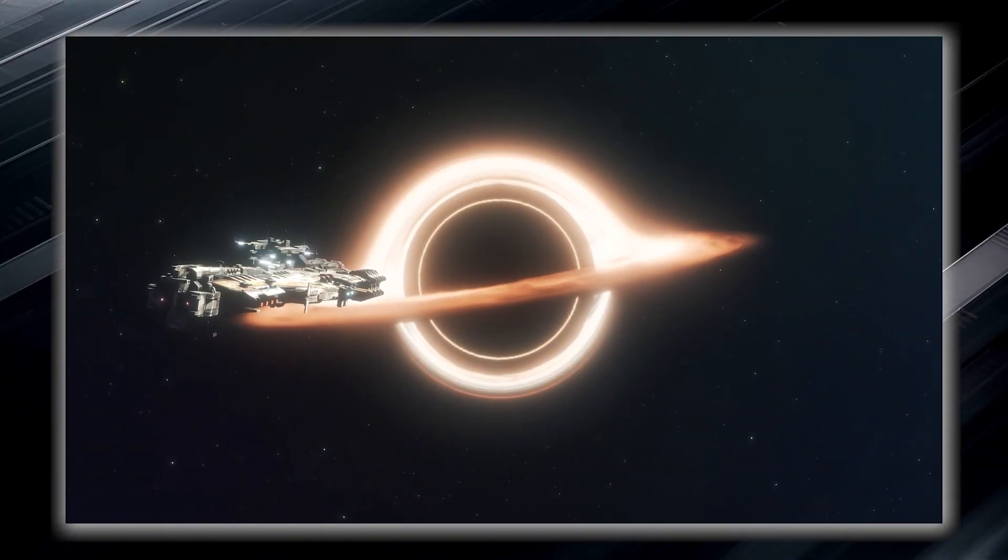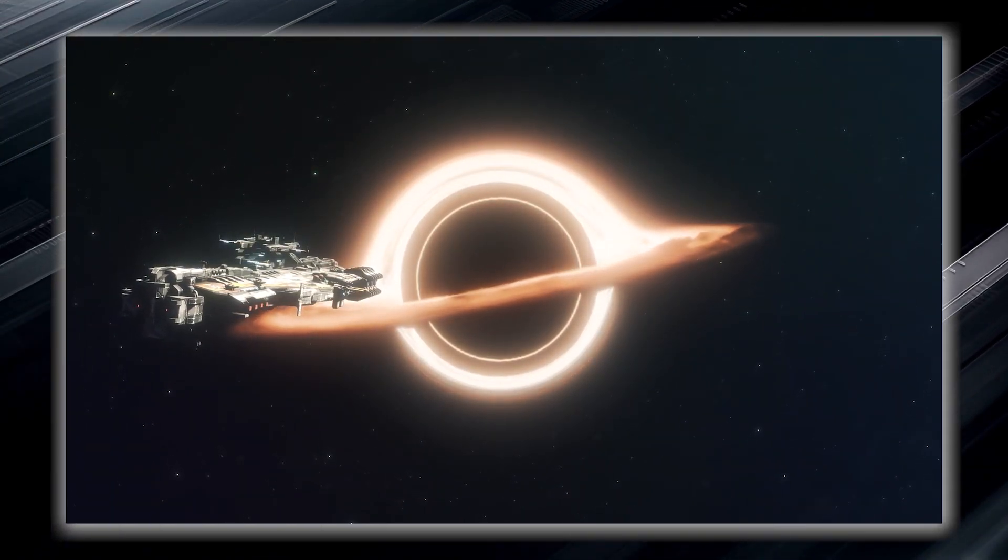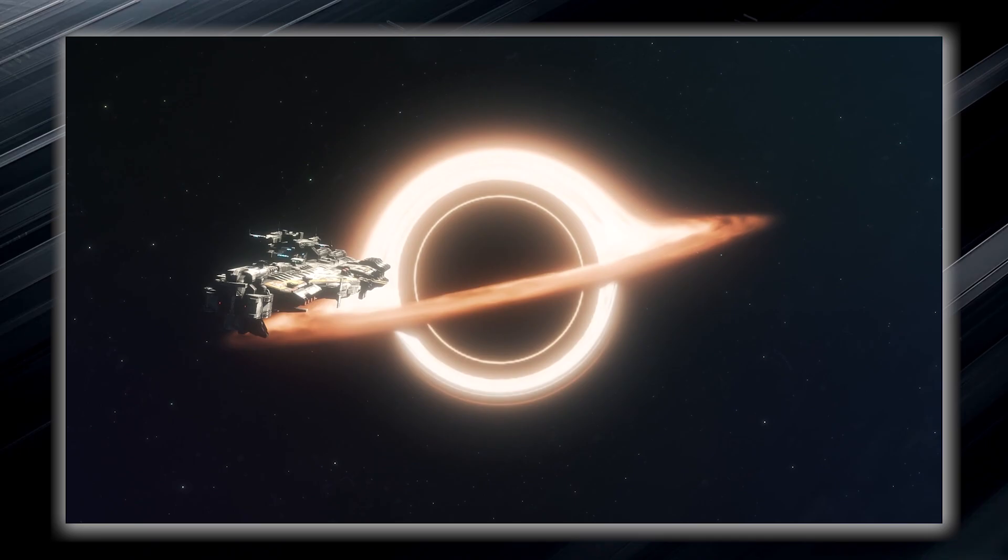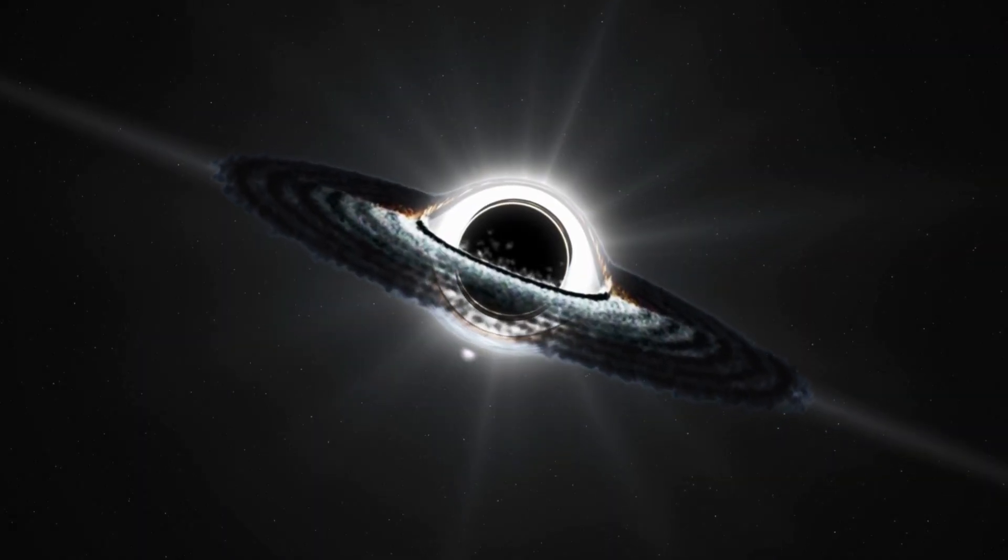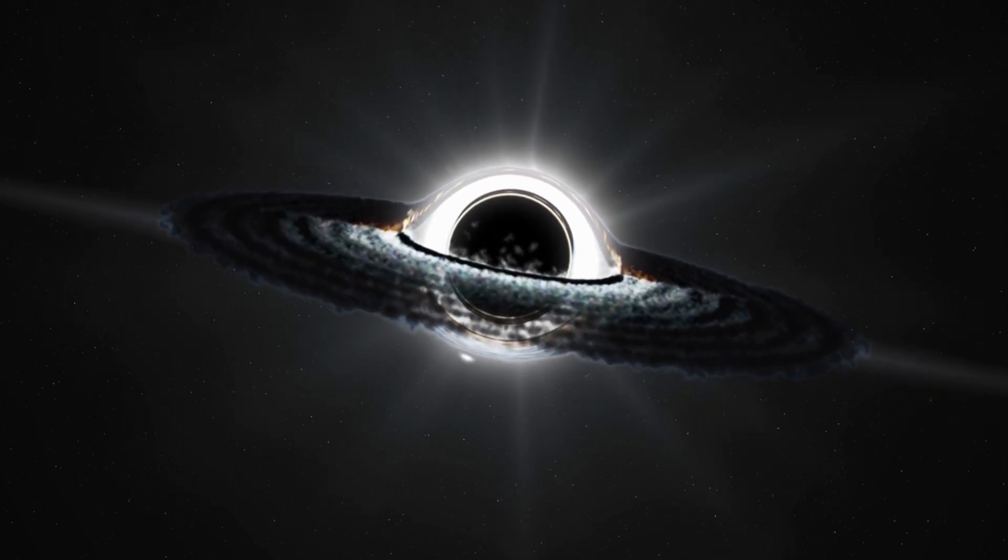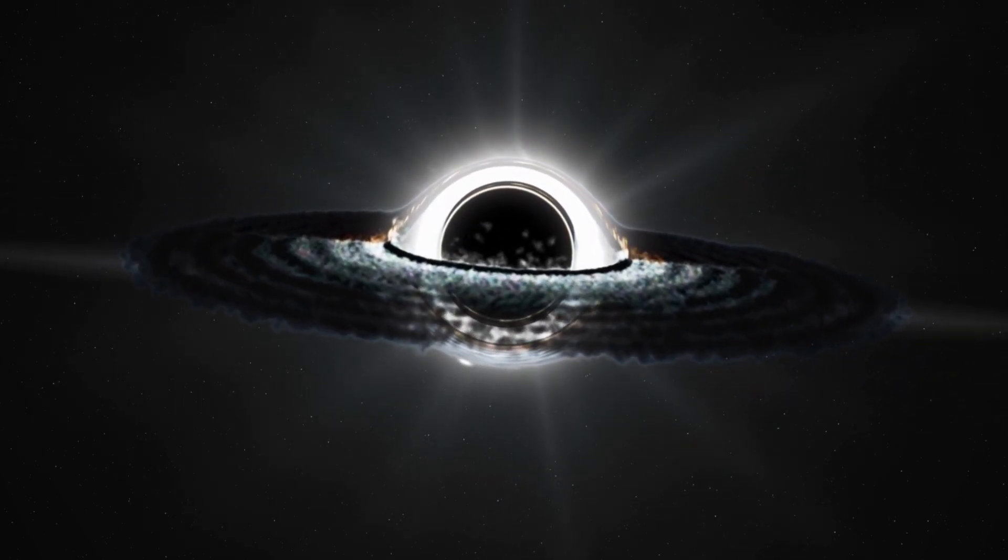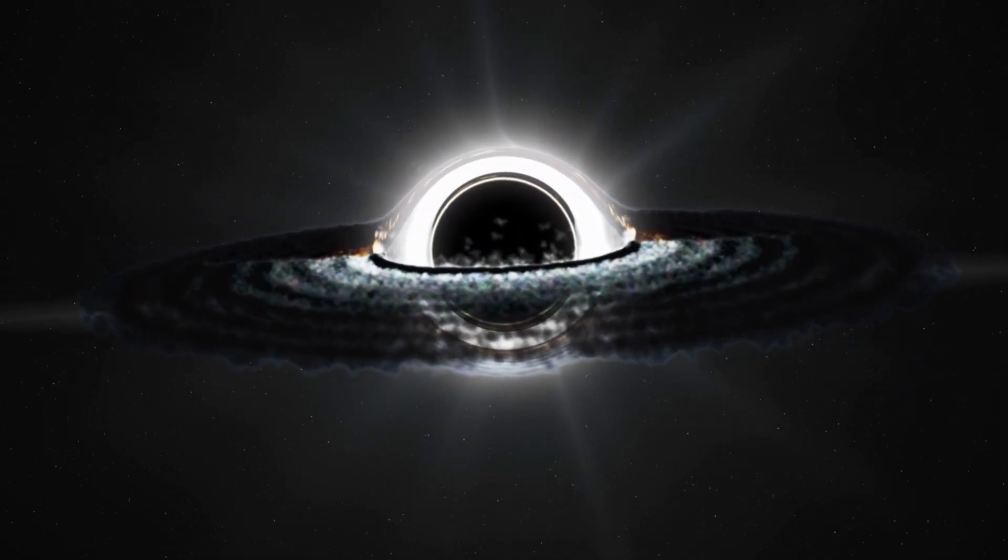Once something, such as an unfortunate spacecraft or even light, crosses its boundary, it can never escape the clutches of the black hole. The event horizon forms an invisible force field that holds everything within it, including light, which is normally considered the fastest entity in the universe.